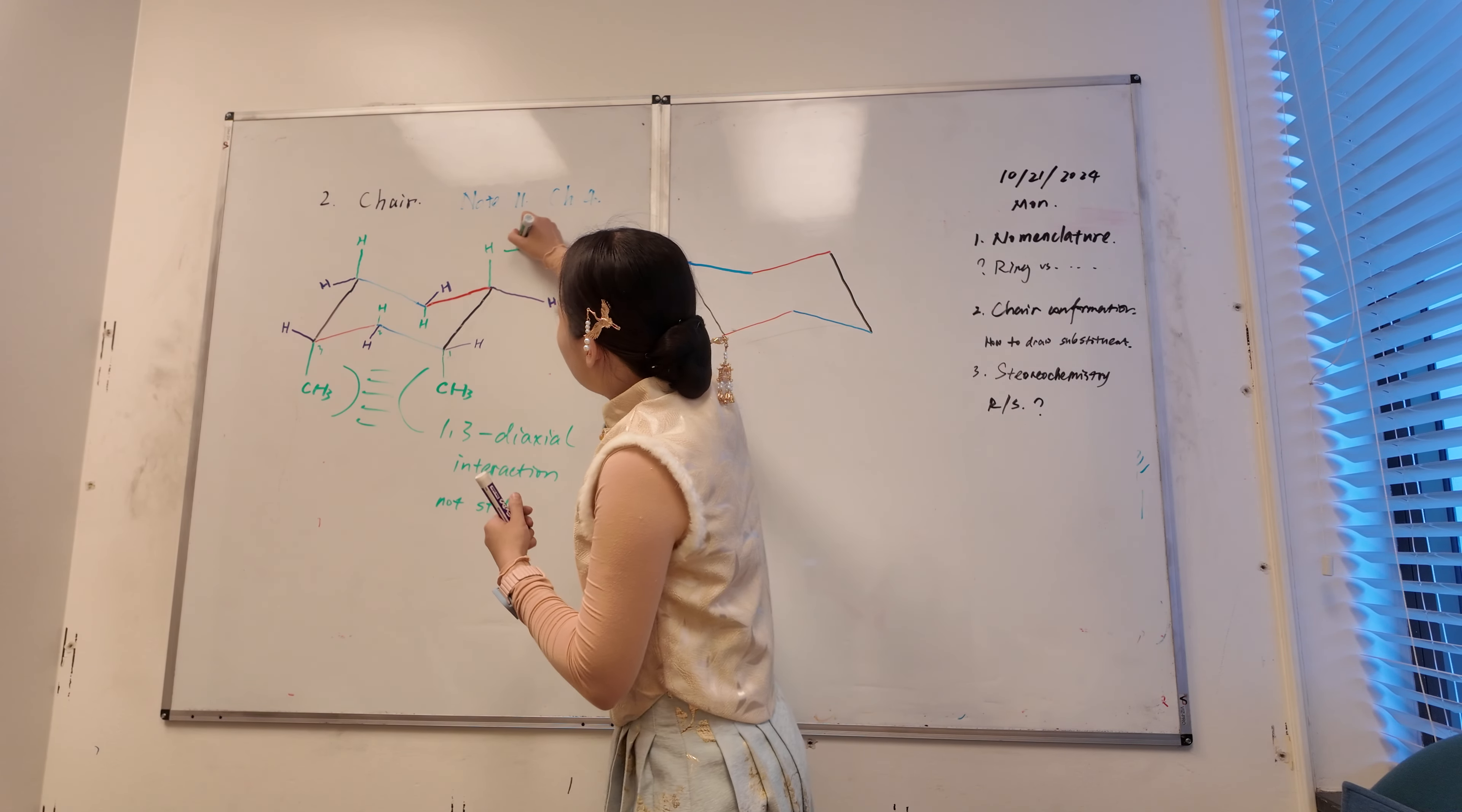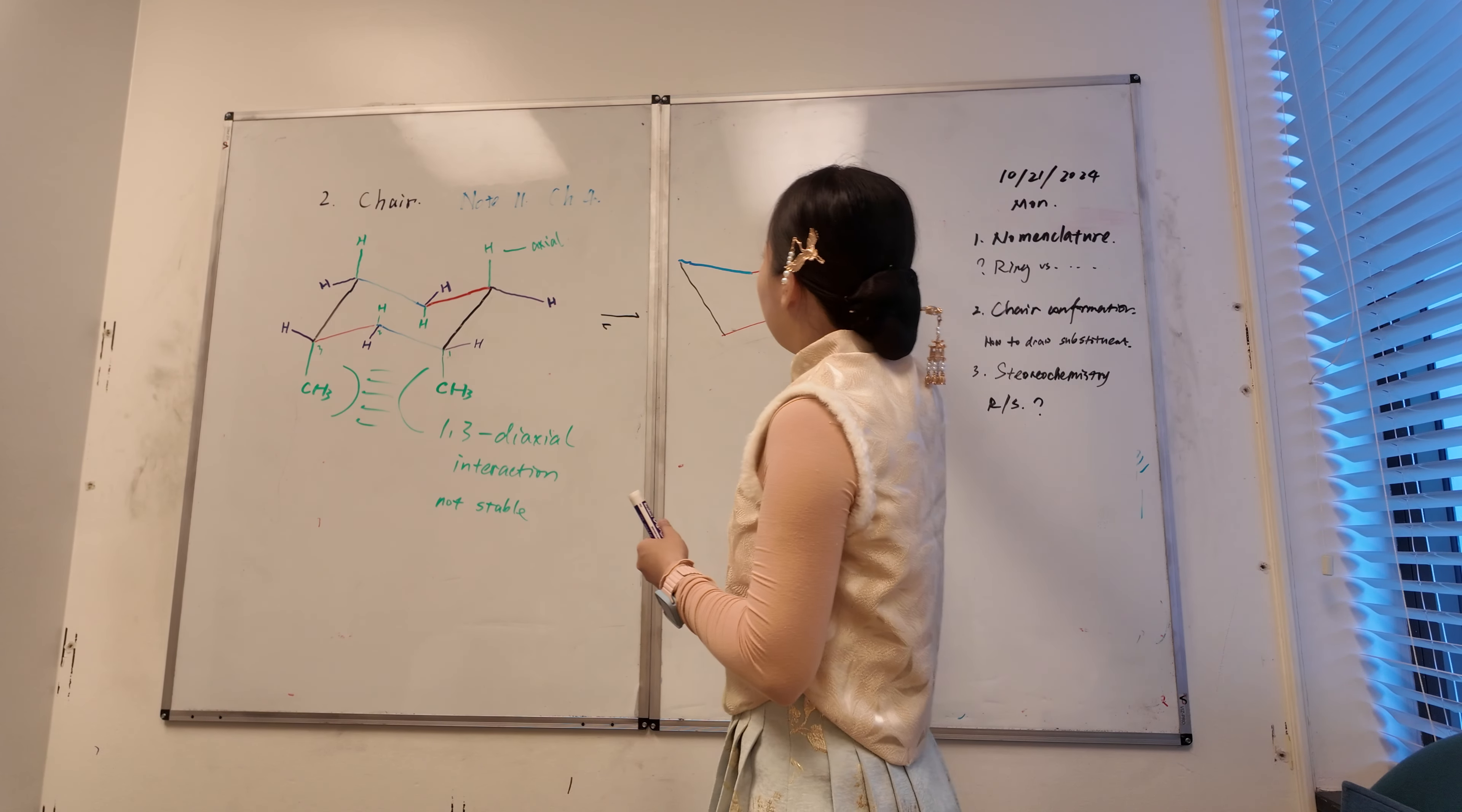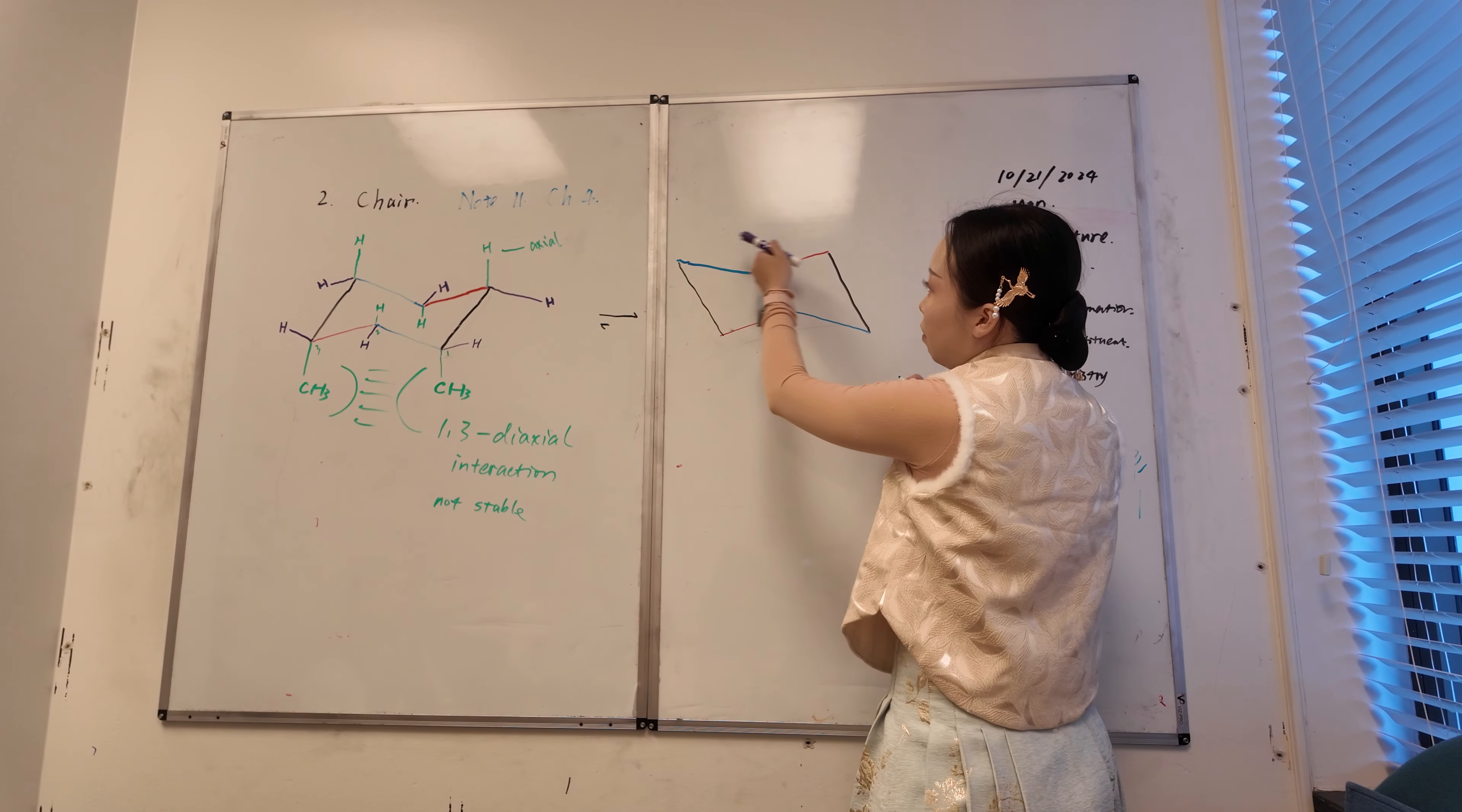This is axial. Well all the green axial will now become equatorial in this case. So look at the green was axial but now become equatorial.